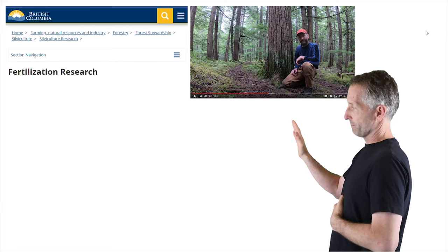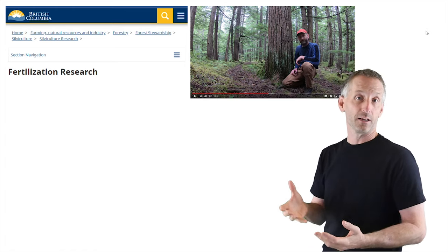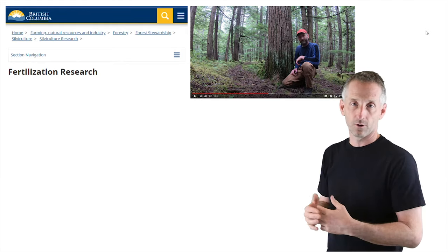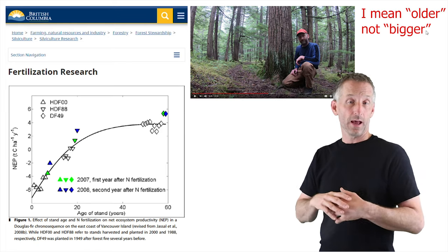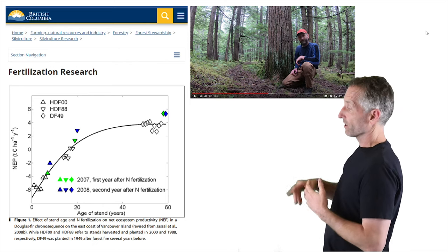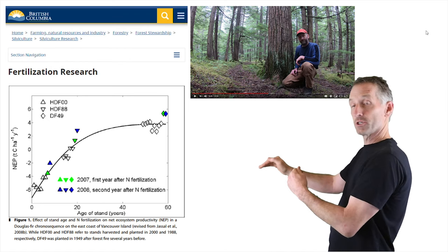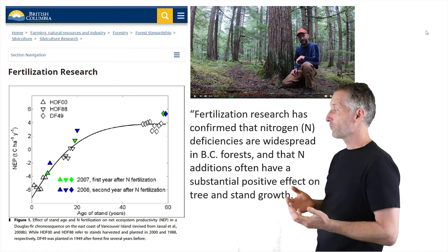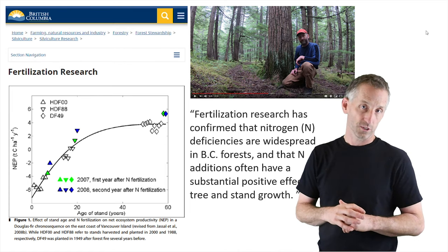In British Columbia, particularly northern British Columbia, there are many studies trying to understand what's limiting forest growth, since foresters want to harvest trees for wood. They've done a series of fertilization experiments. As tree stands get bigger, they have higher total productivity, but in plots where they're also fertilizing with nitrogen, you see a higher productivity for a given stand age. Nitrogen fertilization research has confirmed that nitrogen deficiencies are widespread in BC forests and that nitrogen additions have a substantial positive effect on tree stand growth.